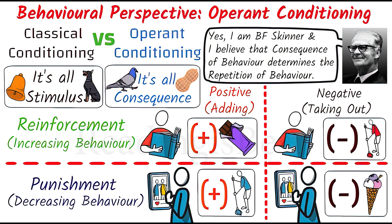When we decrease the likelihood of a behavior by removing a pleasant consequence, it is called negative punishment. In negative punishment, whenever a person performs undesired or unwanted behavior, we remove something pleasant from their life as a consequence of that unwanted behavior.